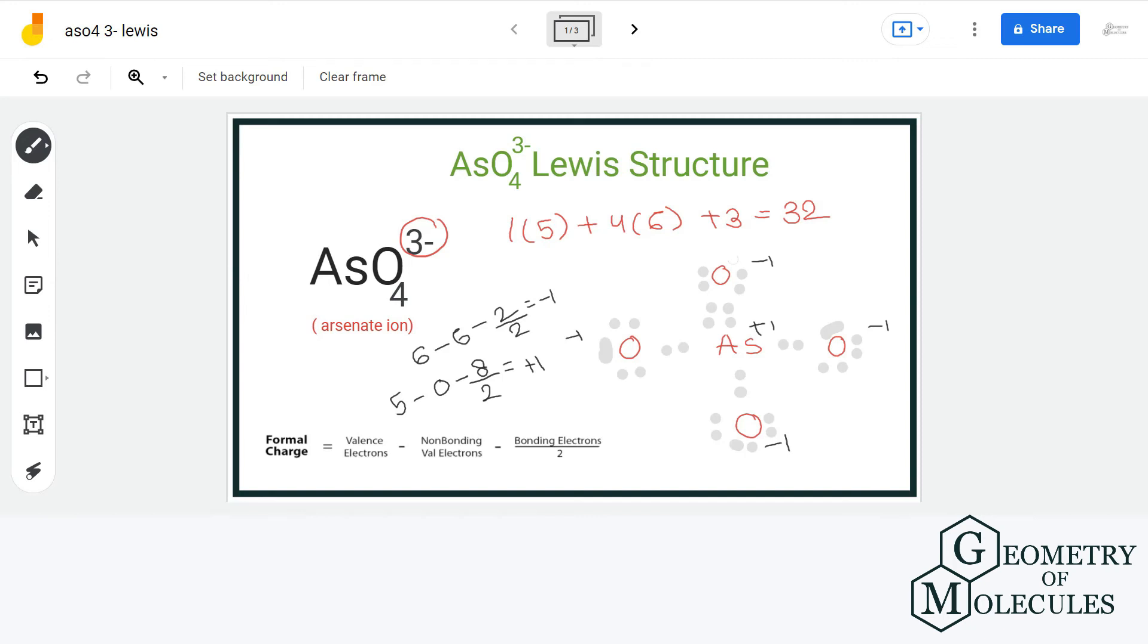Note that arsenic can expand its octet and can have more than 8 electrons in outer shell. Now, this will give us a formal charge of 0 on arsenic and this oxygen. Also, the sum of formal charges must be equal to the overall charge of the ion. In this Lewis structure, these 3 oxygen atoms have minus 1 formal charge that equals to minus 3 charge on ion, and we have minimized the unequal charge distribution by adding a double bond.